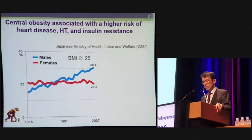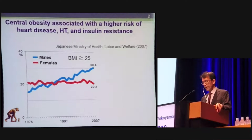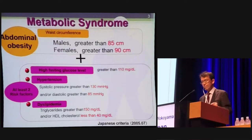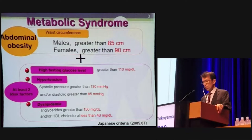The Japanese Ministry of Health estimated the prevalence of LUTS in the male population with BMI greater than 25 to be as high as 30 percent. Human history is changing from a fight against hunger to a fight against obesity. Central obesity is associated with higher risk of heart disease, hypertension, and insulin resistance. Metabolic syndrome is defined in Japan as the simultaneous occurrence of abdominal obesity and at least two of the following three risk factors: high fasting glucose level, hypertension, and dyslipidemia.